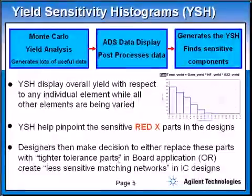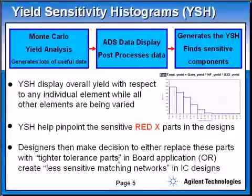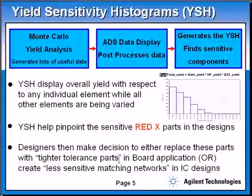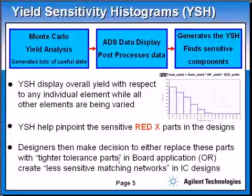Once you find out these red X parts in the design, designers make the decision to either replace these parts with tighter tolerance parts. For a board design, you can purchase parts with much tighter tolerance and less sensitivity by paying a little bit of extra money. Or if you have an IC design where you cannot change components, you can make wise decisions on some components. If you cannot, you can change the whole matching network to yield a less sensitive matching network for your design.